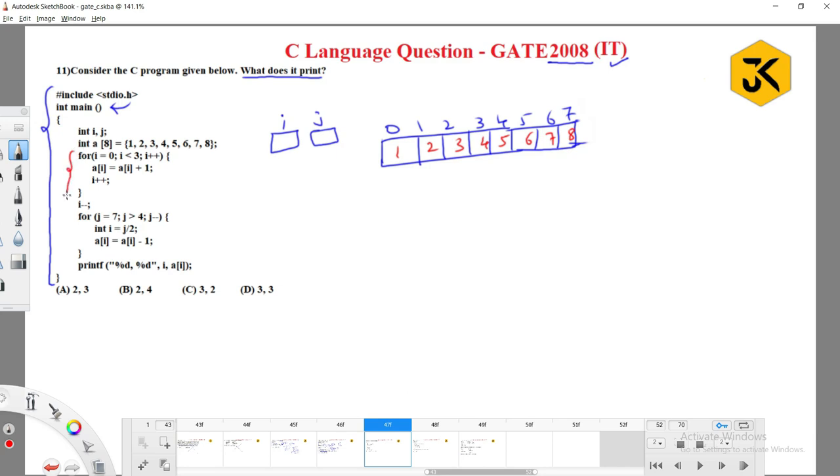They have taken one for loop. This for loop is ranging from - let me take for loop - this i value is zero and it is going to iterate until i less than three, meaning that it can do zero one two. a of i equals a of i plus one.